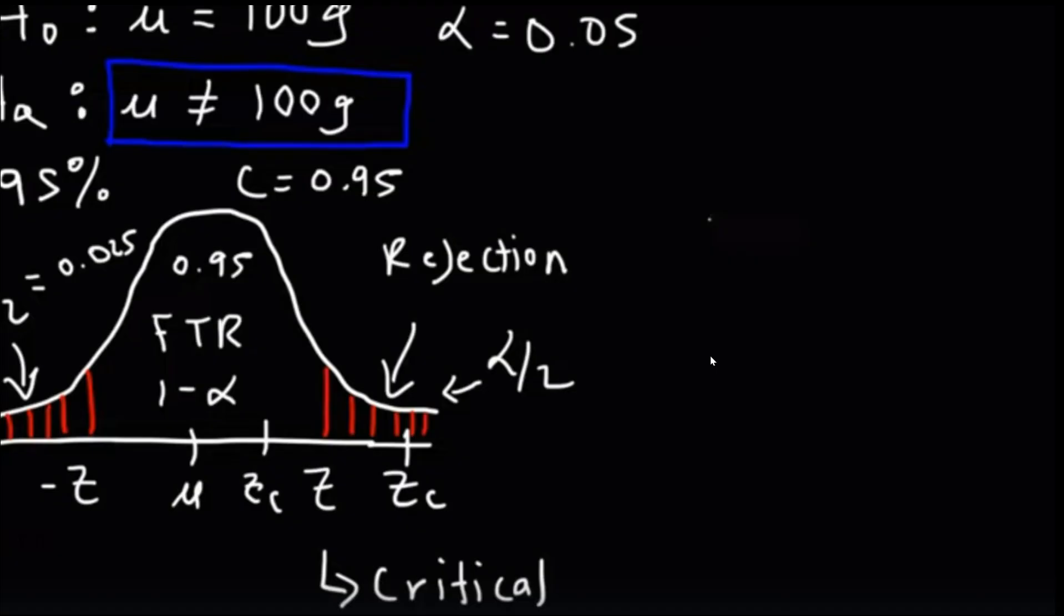Take an example. The shaded area represents the rejection regions, and the non-shaded area is the failed to reject region. The Z values that separate these regions are known as the critical values.